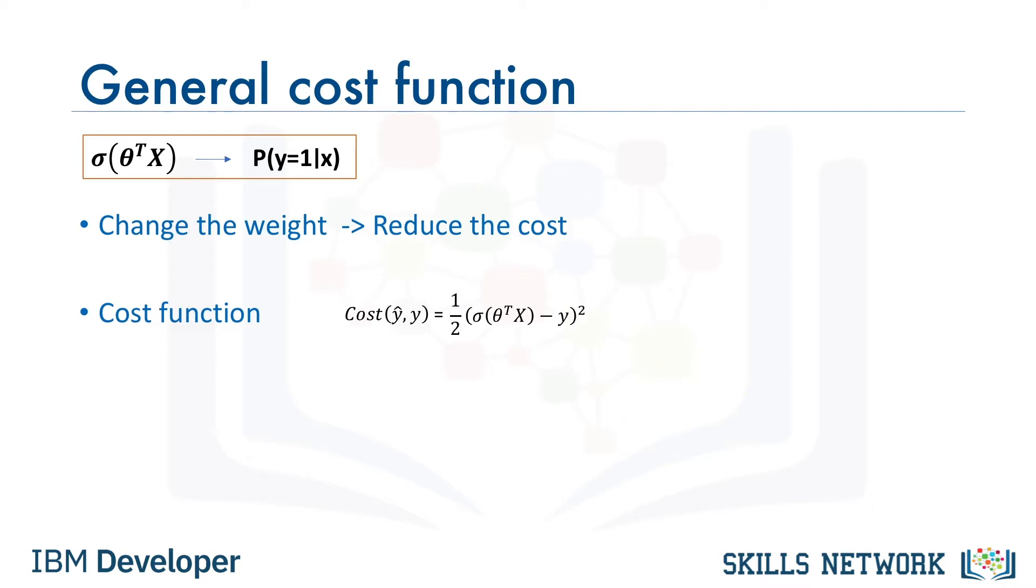Usually, the square of this equation is used because of the possibility of the negative result, and for the sake of simplicity, half of this value is considered as the cost function through the derivative process. Now we can write the cost function for all the samples in our training set. For example, for all customers, we can write it as the average sum of the cost functions of all cases. It is also called the mean squared error, and, as it is a function of a parameter vector theta, it is shown as J of theta.